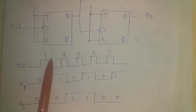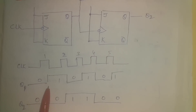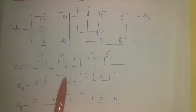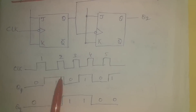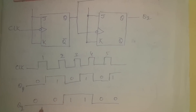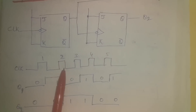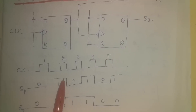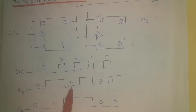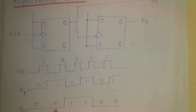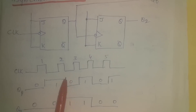Looking at the timing diagram: at the negative edge of the first clock pulse, Q1 undergoes a transition and becomes high because the earlier state was low — the JK flip-flop toggles. Q2 remains at zero. At the negative edge of the second clock pulse, Q1 undergoes a transition and becomes low again.